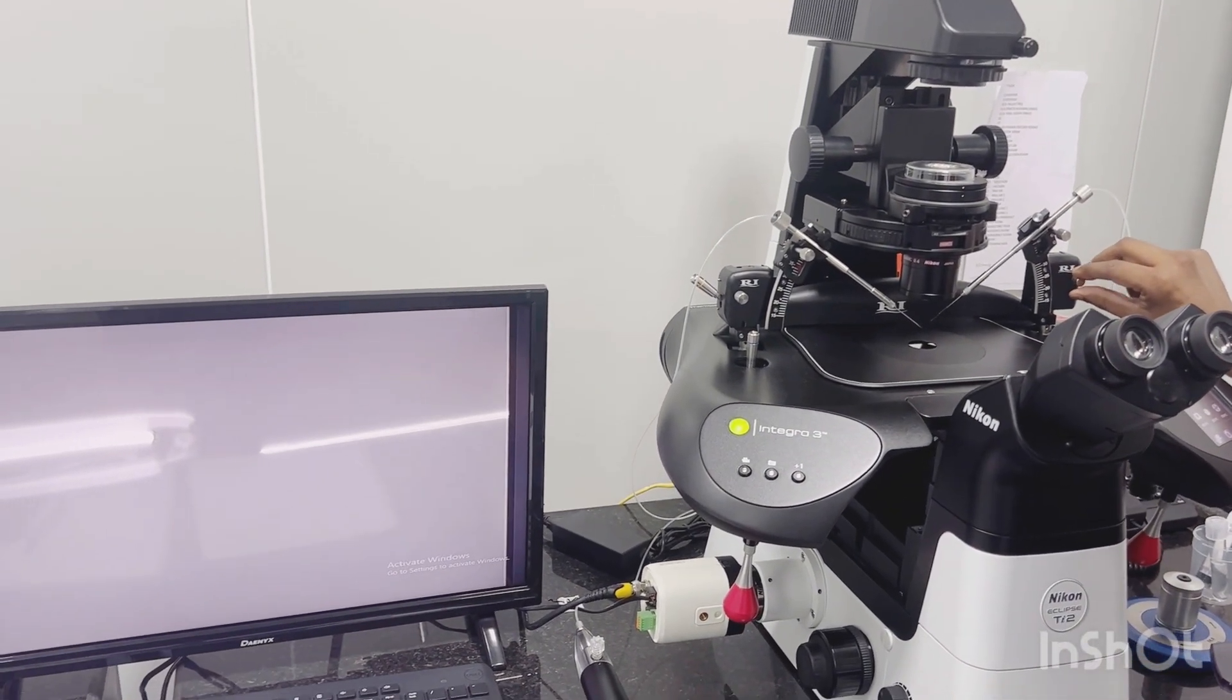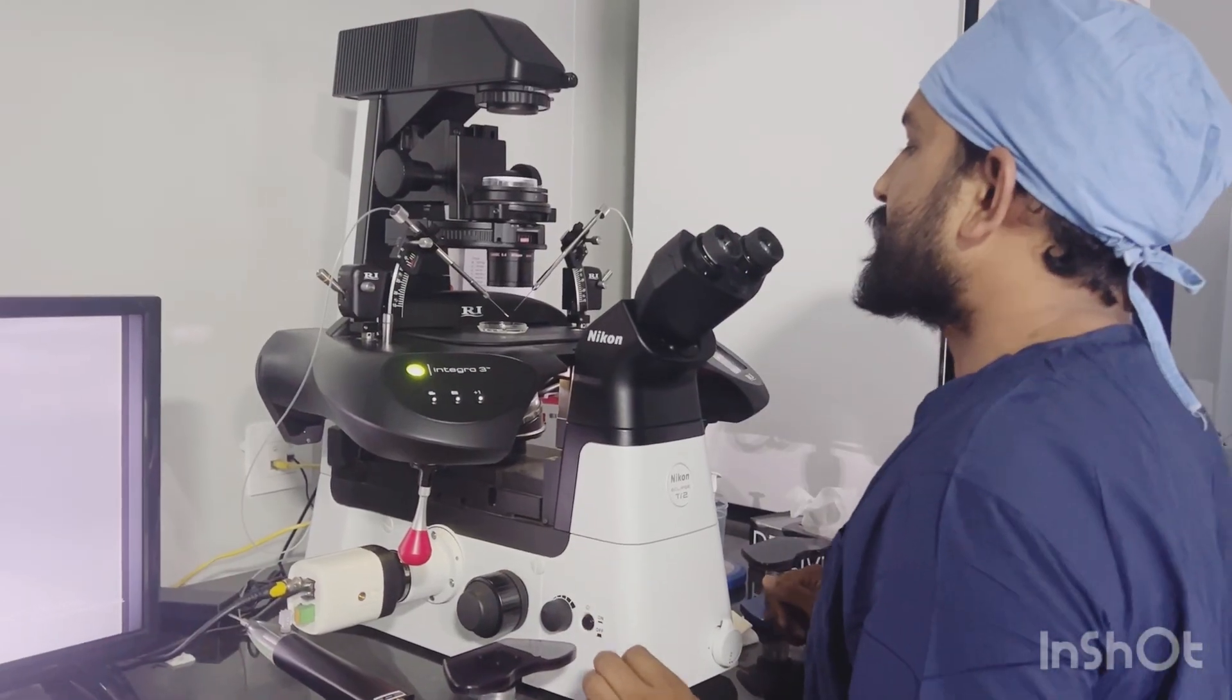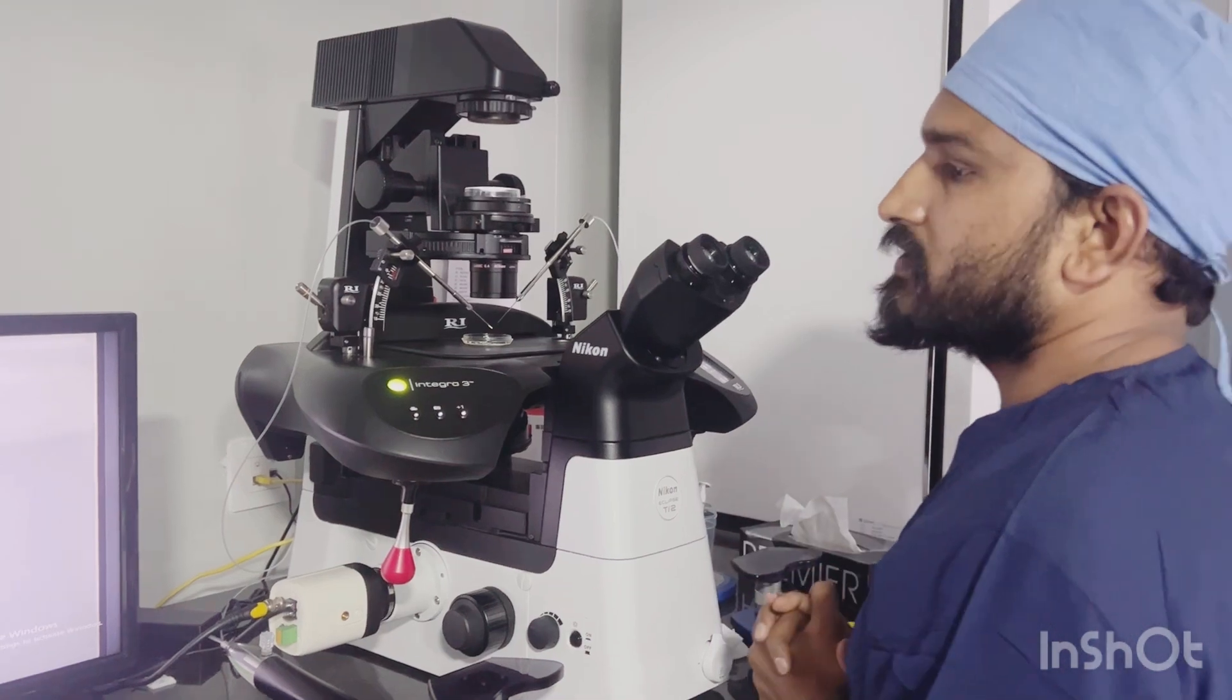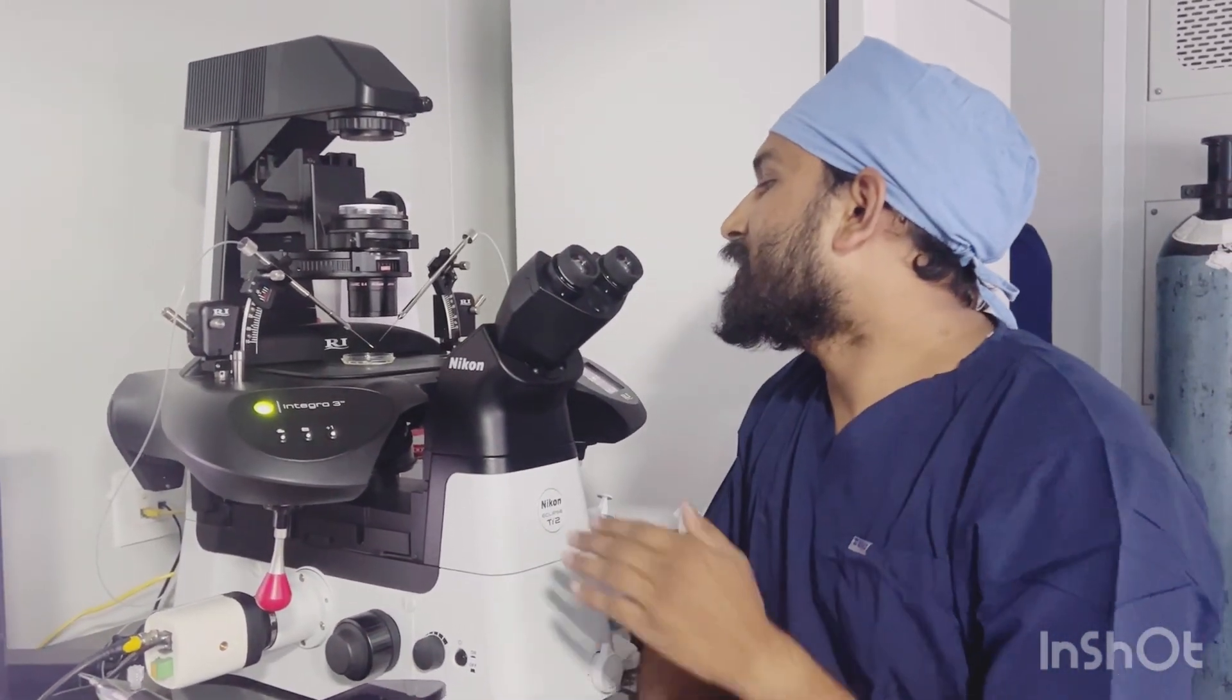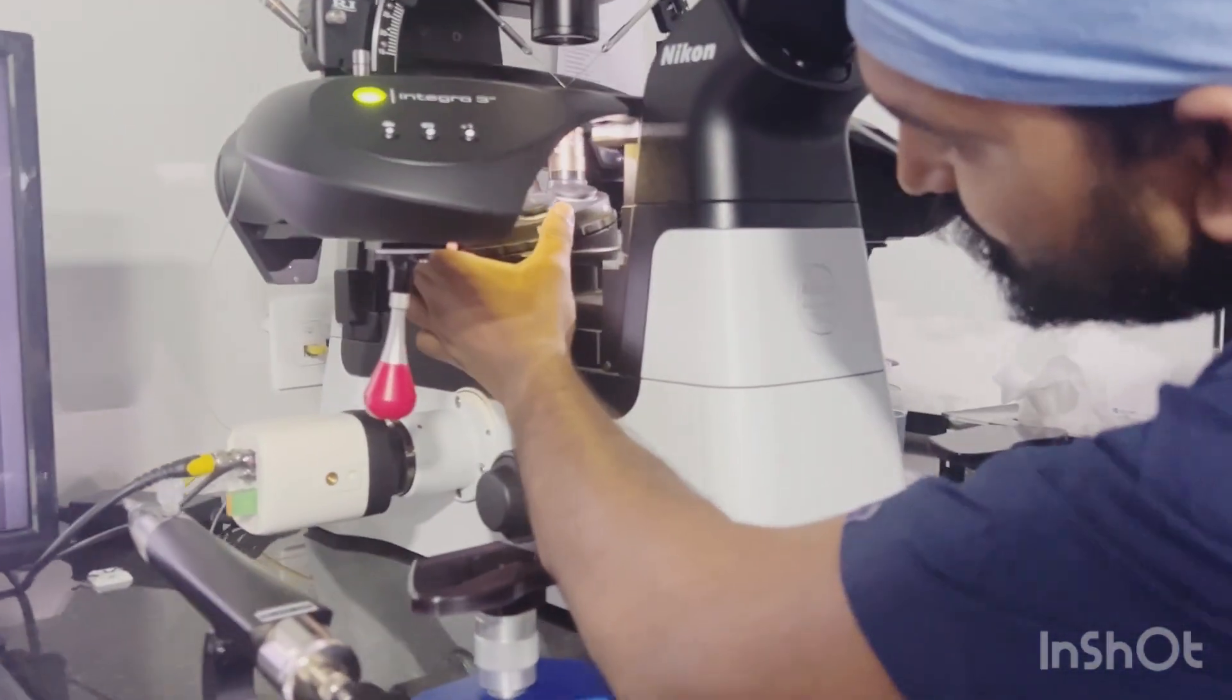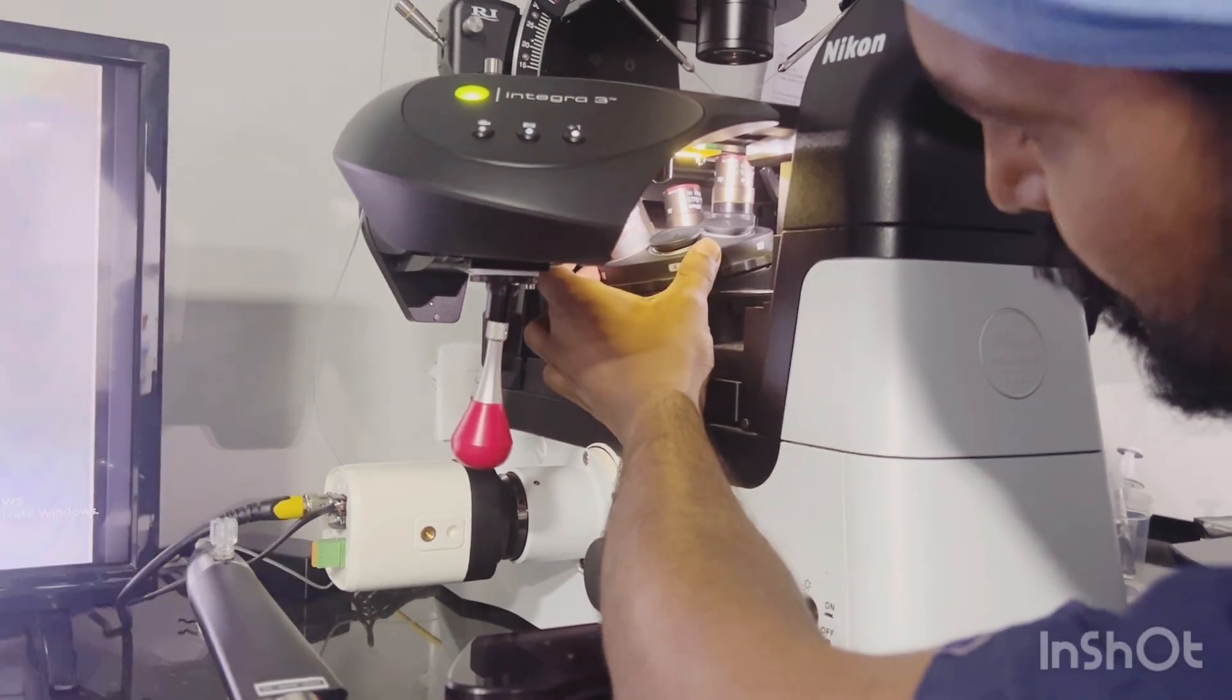Now friends, we have sperm within our ICSI dish. I have to align my injecting pipette in that drop of sperm. First of all, we are going to shift our objective from long 4x to small 4x.